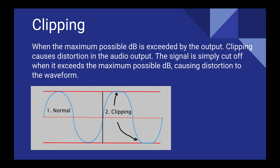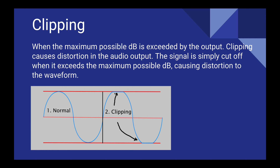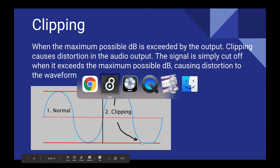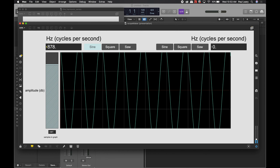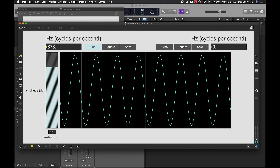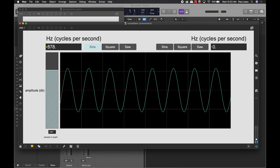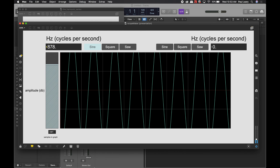Clipping is when the maximum possible decibels is exceeded by the output. Clipping causes distortion in the audio — the signal is simply cut off when it exceeds the maximum possible decibels, causing distortion to the waveform. Think of a nice rounded sine wave that gets cut off when clipping occurs. The waveform also reflects back, which causes additional distortion. The simplest way we see this is when a waveform exceeds and goes beyond the bounds.